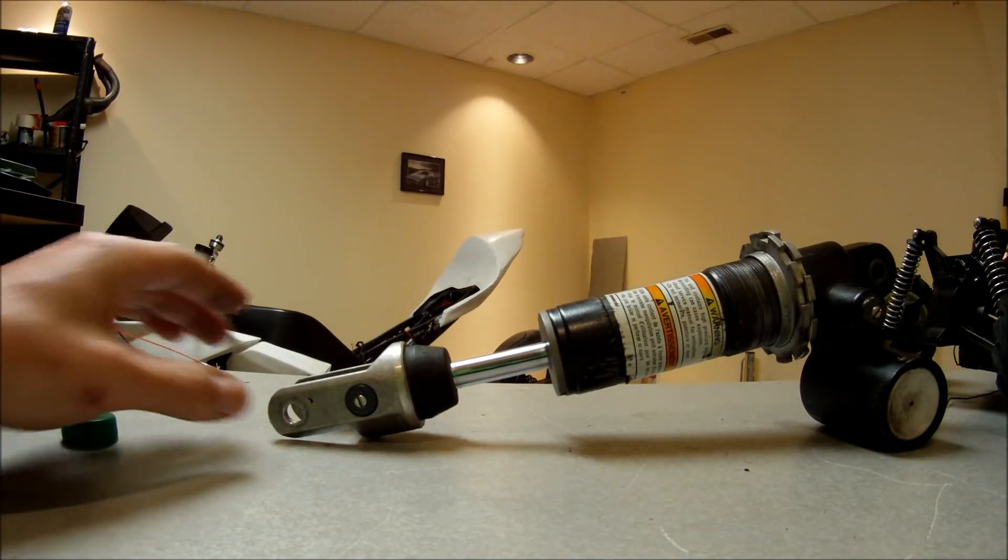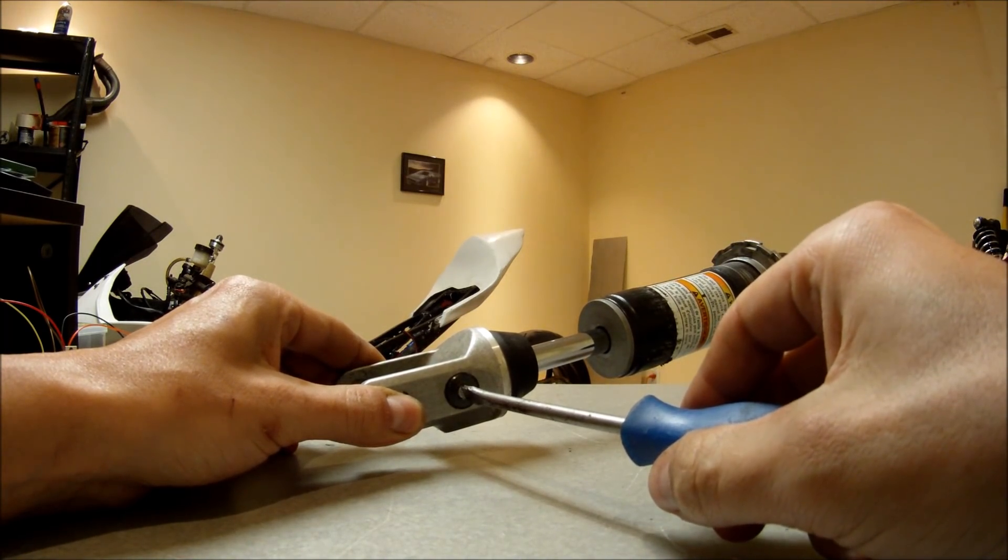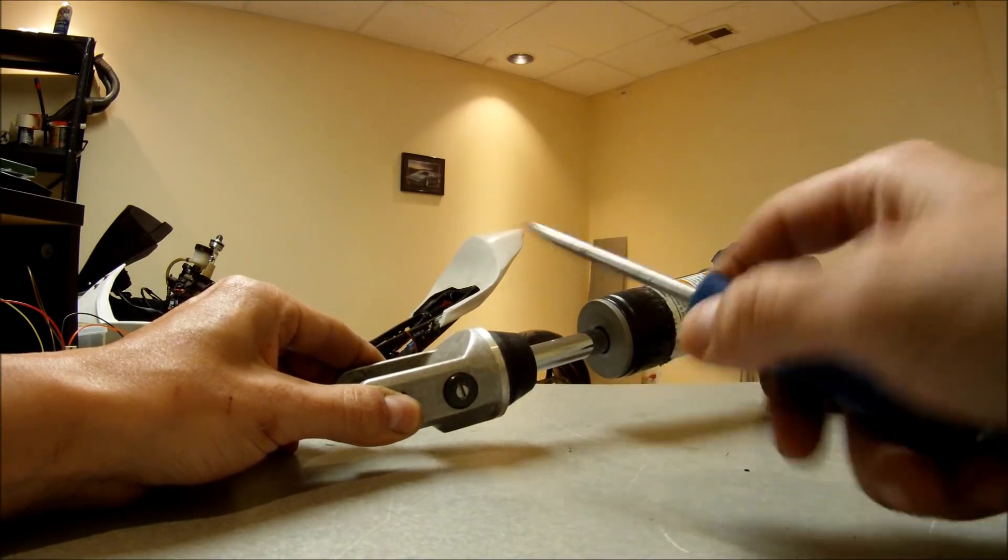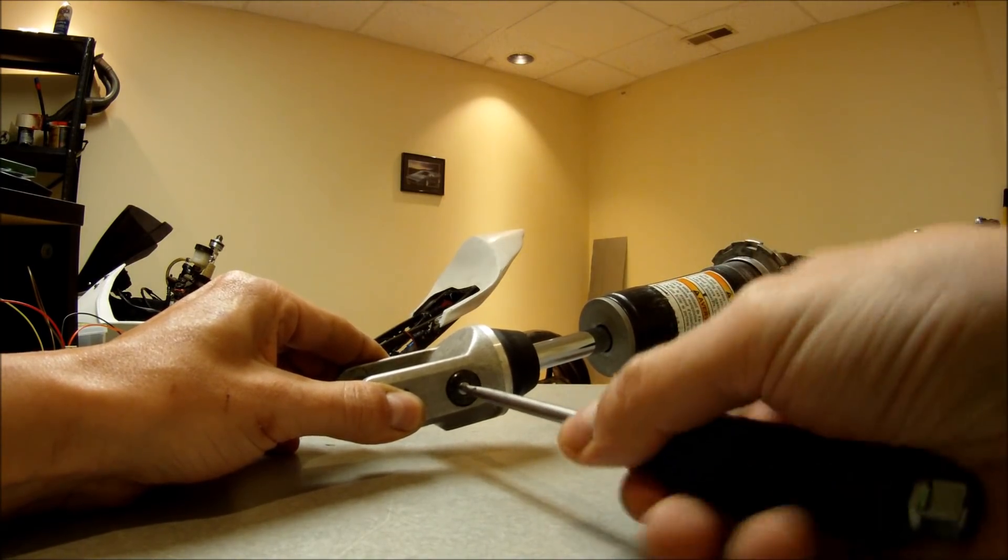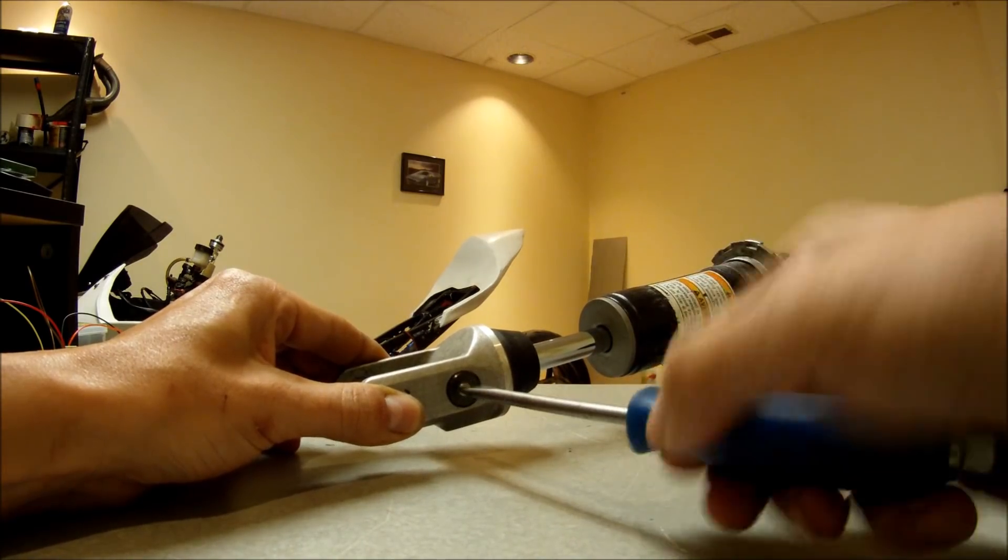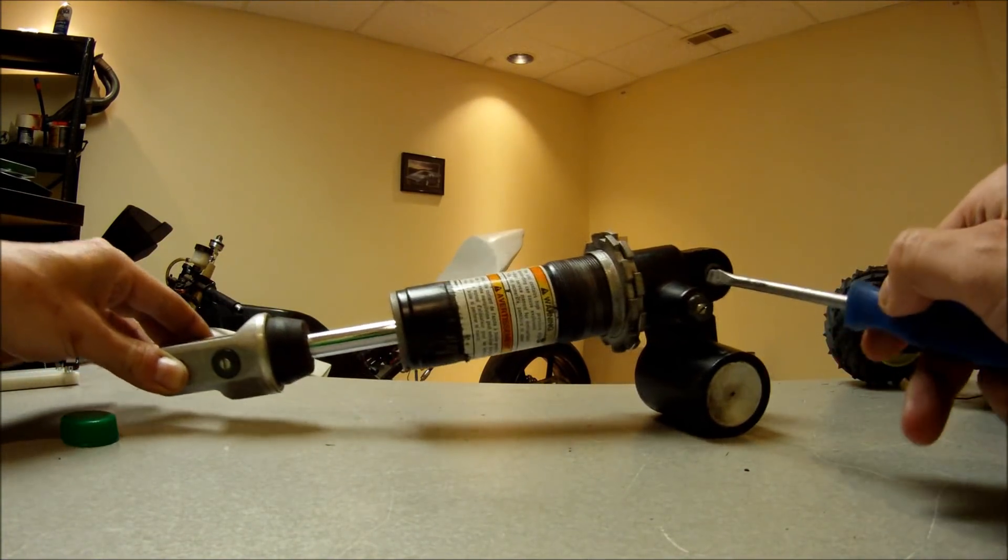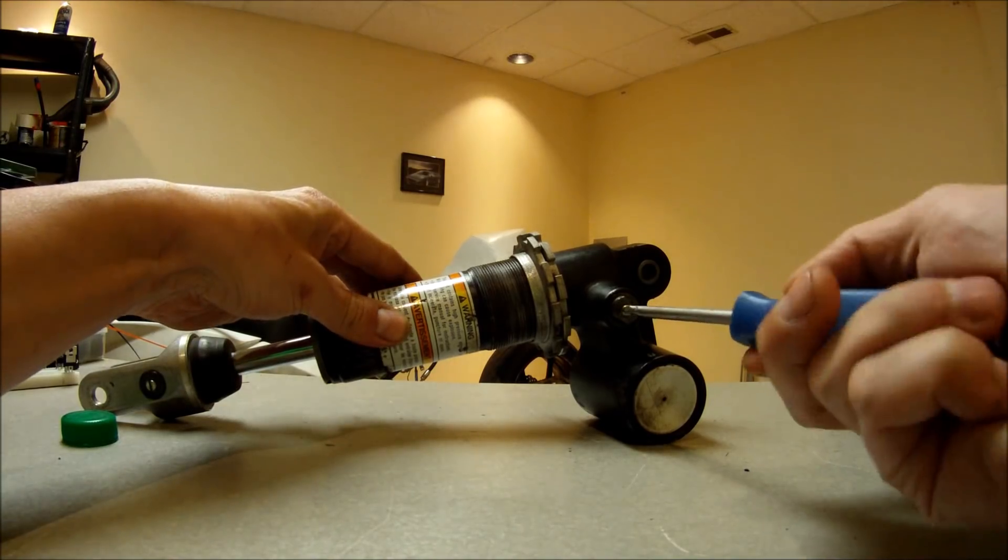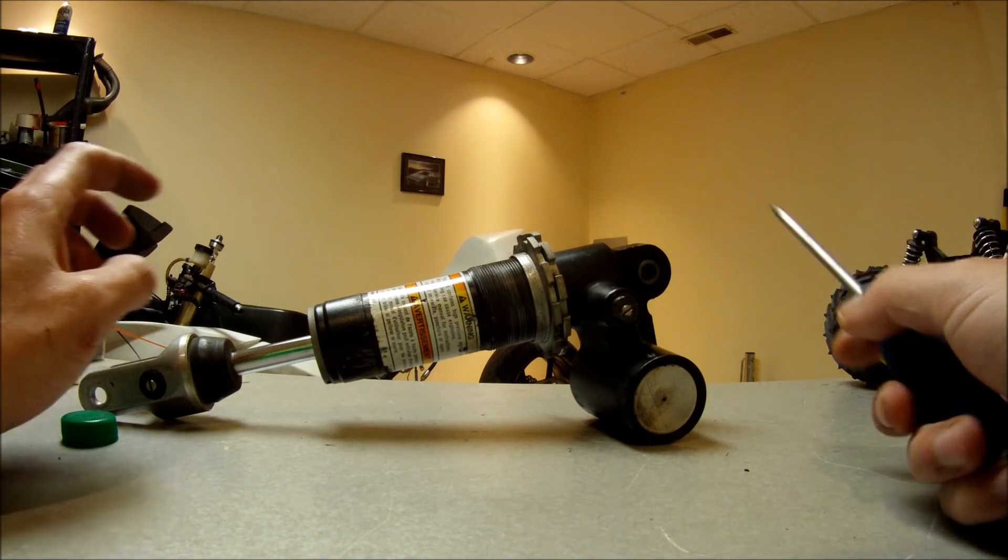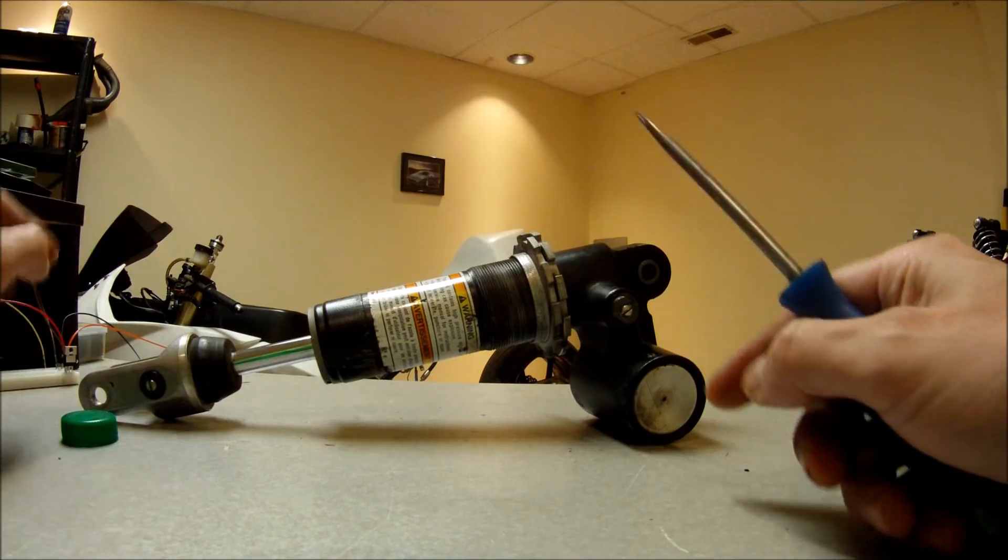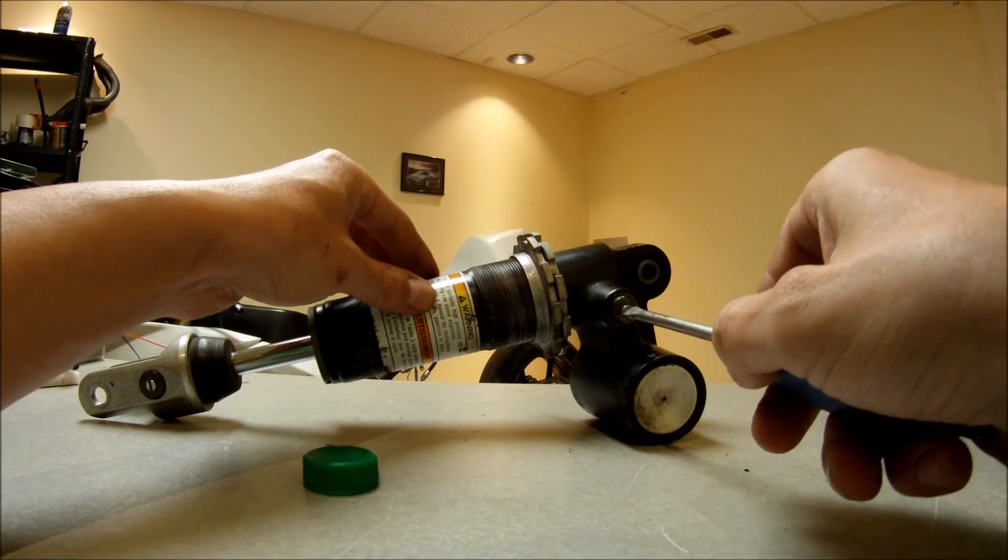For normal street riding, what I do is I usually turn them all the way out into the soft position and then I count. This shock doesn't have any clicks, but I'll start dialing in compression. I'll go one half turn and then I'll go ride it and see how it rides. If it still goes over bumps and the tire is flying over, then I add another half a turn.